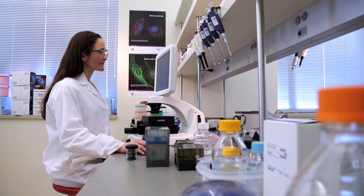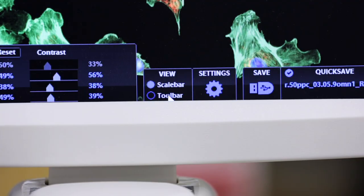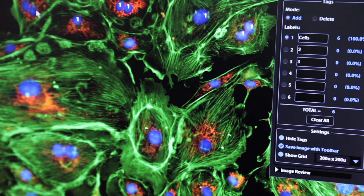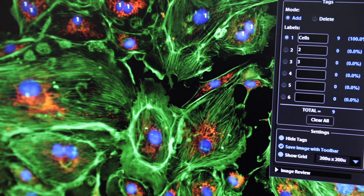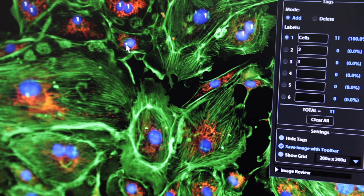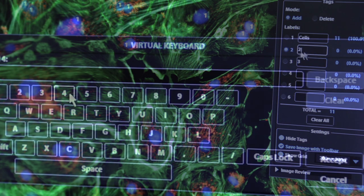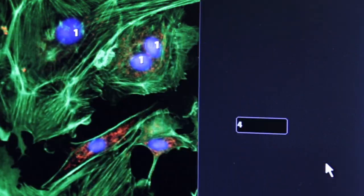The count tool streamlines cell counting by providing up to 6 self-chosen labels for each captured image on screen. As you tag items, the system will keep a running tally of counts with percentages for each label assigned.